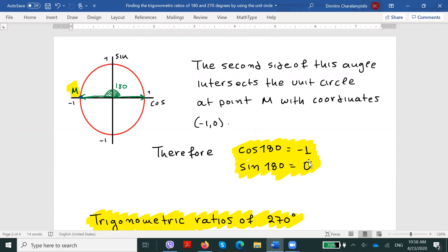And that's how we will calculate the sine and the cosine. More precisely, as I have already stated, the x coordinate will be the cosine of 180 degrees, while the y coordinate will be the sine. Therefore, cos(180°) = -1, while sin(180°) = 0.